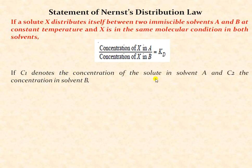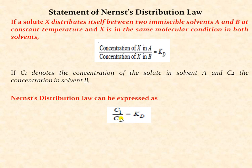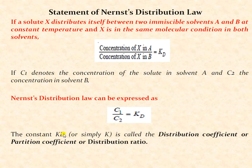If C1 denotes the concentration of solute in solvent A and C2 denotes the concentration of solute in solvent B, then the NERNST distribution law can be expressed as C1 divided by C2 is equal to KD. The constant KD, or simply K, is called the distribution coefficient, partition coefficient, or distribution ratio.